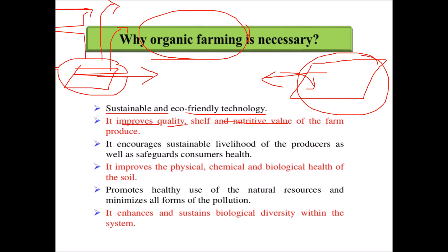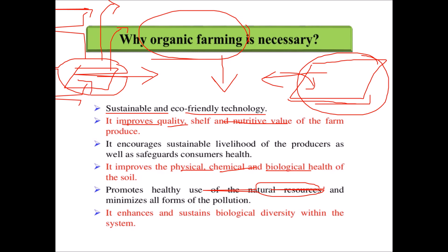It is a two-way benefit: organic farming encourages sustainable livelihoods for producers while also safeguarding consumer health. It also improves the physical, chemical, and biological health of soil, since the soil is not disturbed by chemical use. Additionally, it promotes the healthy use of natural resources and minimizes pollution. Fields free from insecticides, herbicides, and chemicals retain their natural qualities for a longer period.